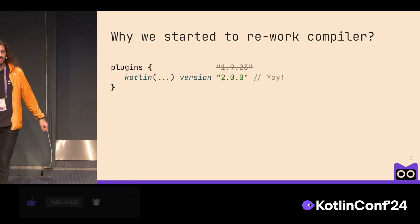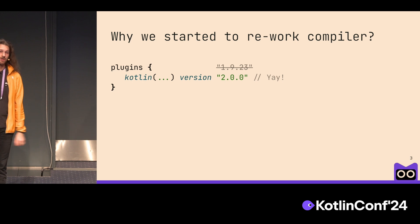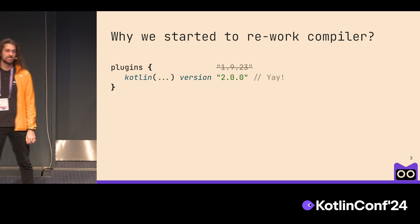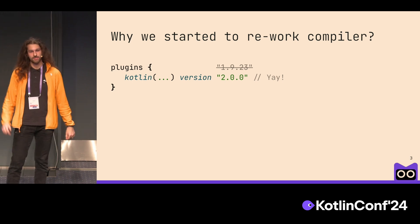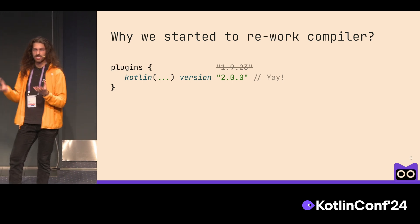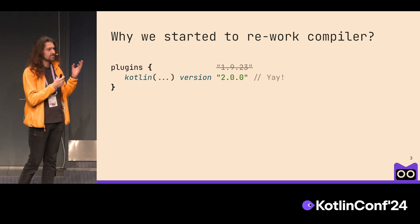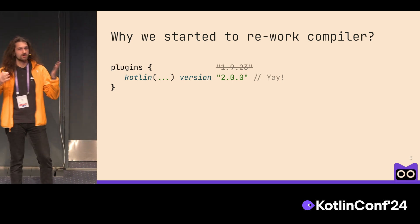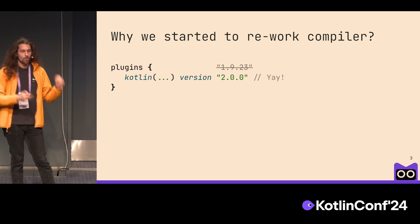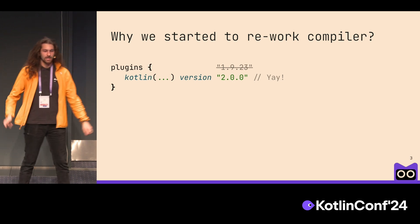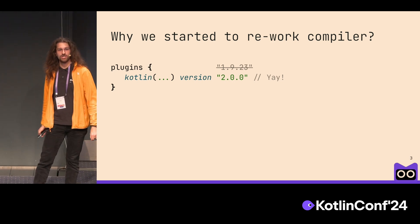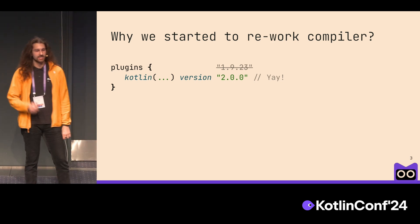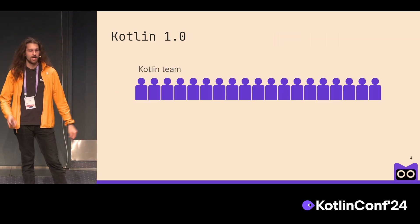So why did we even change the Kotlin compiler so significantly that we decided to advance the major version of the language? Well, to answer that question, let's go back in time a little.